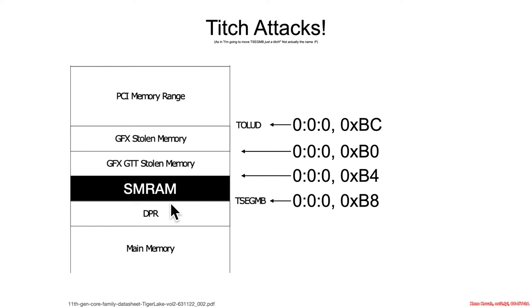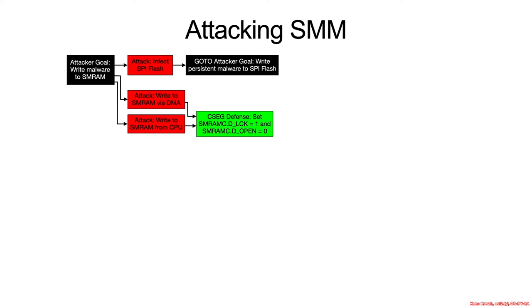Intel generally recommends moving from the compatible memory region up into TSEG because TSEG is granted extra protections. It's protected against DMA attacks automatically — whatever is in this range is not accessible via DMA transactions — and it's also protected against someone directly scribbling into it. The TSEG defense is to lock both TSEG MB and BGSM, the base of GTT stolen memory, which affords protection against DMA attacks and attacks originating from the CPU.